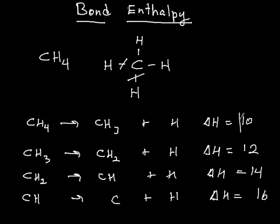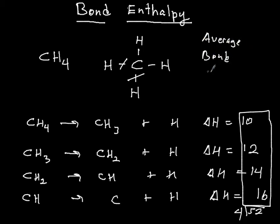So if I added up these numbers here, got a total in this case, that would be what? That would be 30, 42, 52. And then divided by four, that is the average bond enthalpy. The average bond enthalpy. And you need to know what average bond enthalpy is, or the basic idea of the average bond enthalpy.